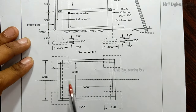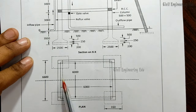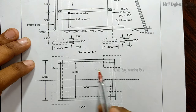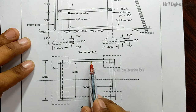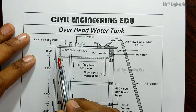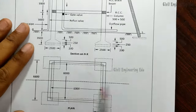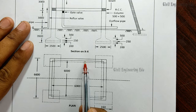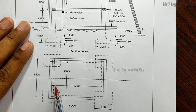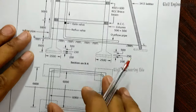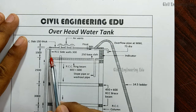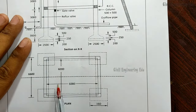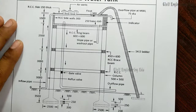The dotted lines shown are beams. Over these beams, the two dark lines represent RCC side walls arranged over the columns and slab. From the wall to the dashed line is nothing but a beam. The internal dimensions of the tank — from this point to this point — are 6 meters by 6 meters.